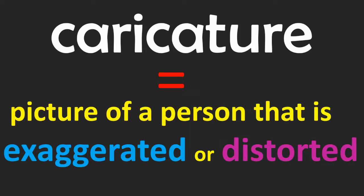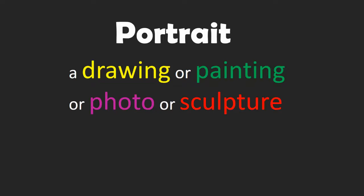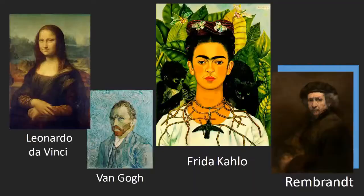In this lesson we are going to learn about caricature. A caricature is a picture of a person that is exaggerated or distorted. Before we talk more about caricature, let's discuss what a portrait is. A portrait is a drawing, painting, photo, or sculpture of a person or a pet.